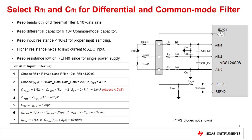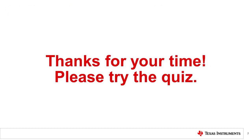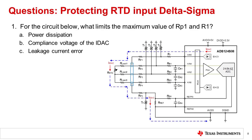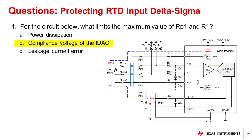Steps 6 and 7 simply verify the cutoff frequencies. This slide is mainly included for completeness and has little to do with input protection. From an input protection perspective, the main concern is to make sure that RFilt is greater than the minimum series protection resistance R1. That concludes this video. Thank you for watching. Please try the quiz to check your understanding of this video's content. Question 1: for the circuit shown, what limits the maximum value of RP1 and R1? The correct answer is B — compliance voltage of the IDAC.